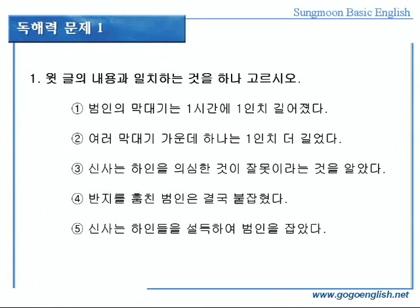그럼, 1번 문제를 풀어볼까요? 윗글의 내용과 일치하는 것을 하나 골라라. 1번, 범인의 막대기는 1시간에 1인치 길어졌다. 아니죠, 실제로 길어진 것이 아니죠. 2번, 여러 막대기 가운데 하나는 1인치 더 길었다. 본문에서 사실 모든 막대기는 길이가 같다, 라고 했습니다. 3번, 신사는 하인을 의심한 것이 잘못이라는 것을 알았다. 그런 언급은 없습니다. 4번, 반지를 훔친 범인은 결국 붙잡혔다. 당연히 그랬겠죠? 정답은 4번입니다. 5번, 신사는 하인들을 설득하여 범인을 잡았다? 설득한 것이 아니라 속임수를 써서 잡은 것이죠. 범인을 잡아내는 주인의 재치가 돋보이는 글이었습니다.